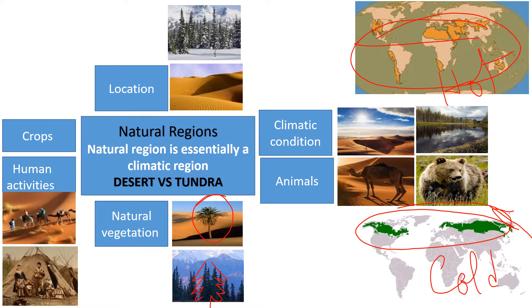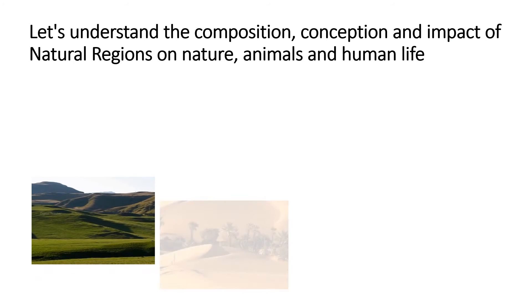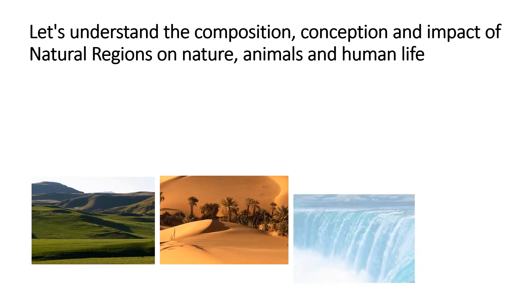People in the desert practice transhumance — because in search of water they live in those areas where water is available. In the tundra it is very, very cold, so they live in tents to save themselves from the harsh winter. The main activity there is date cultivation, and a number of types of berries are grown in the region. We have to understand the impact of natural region on nature, animals, and human life.